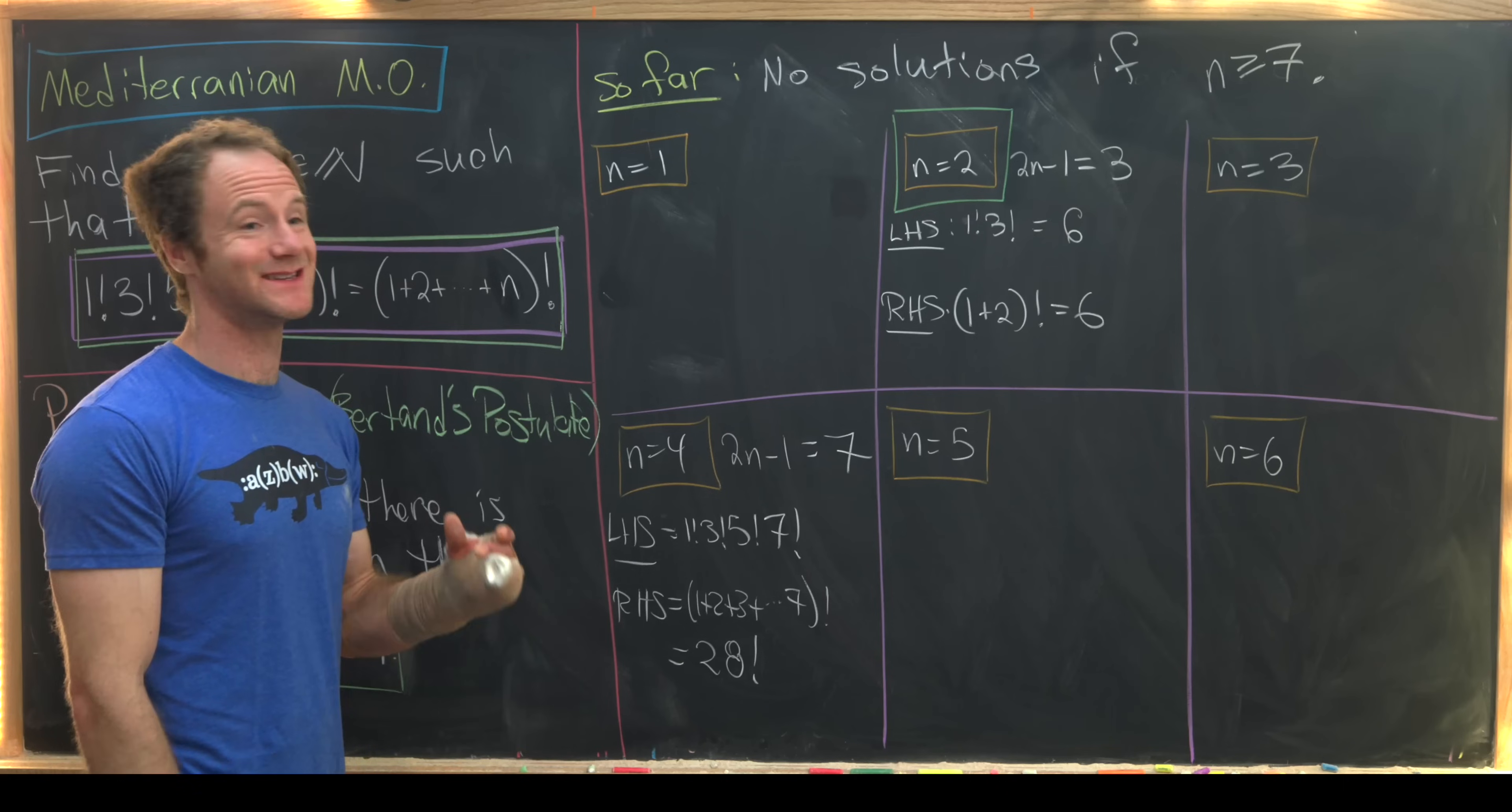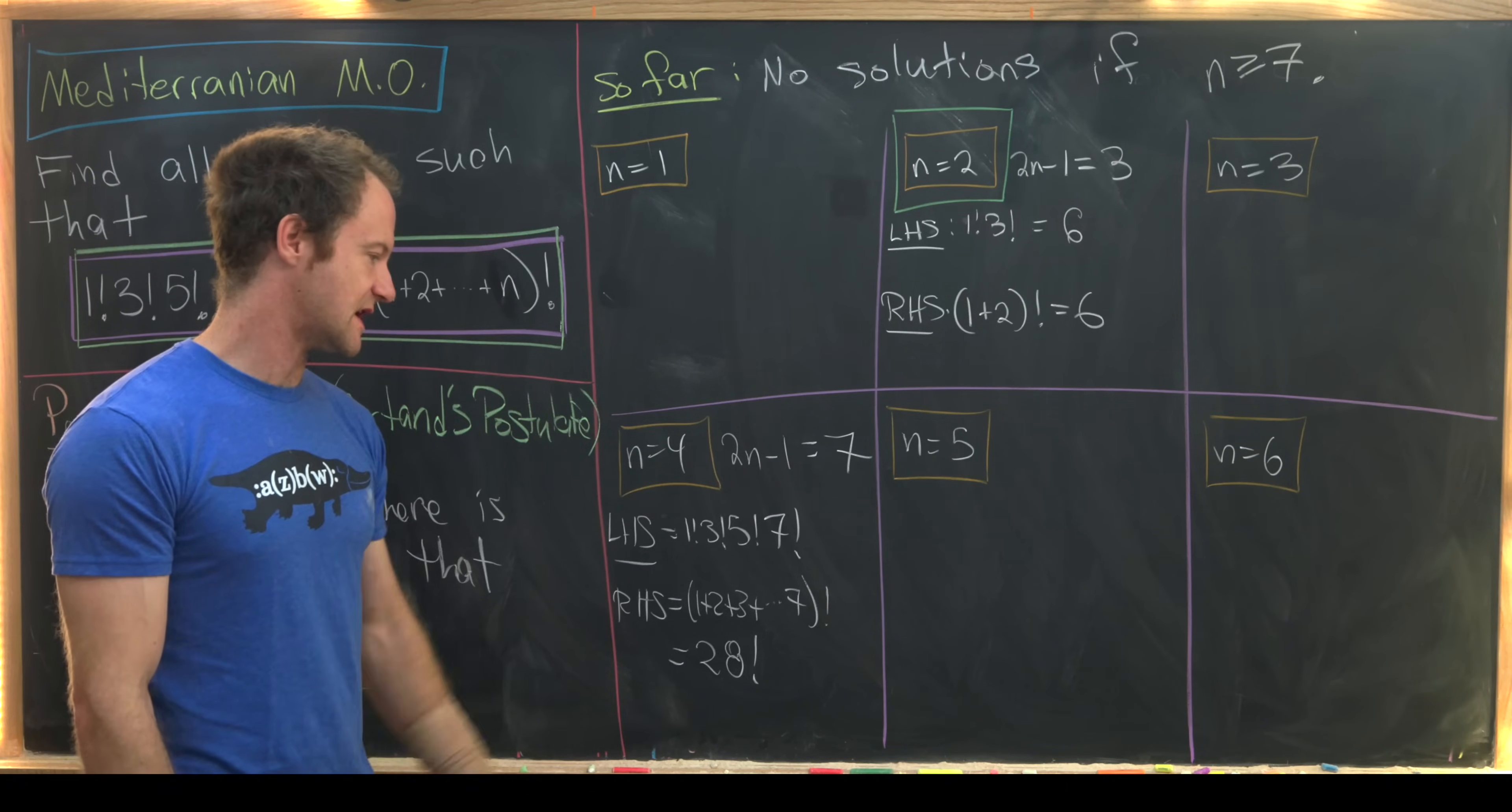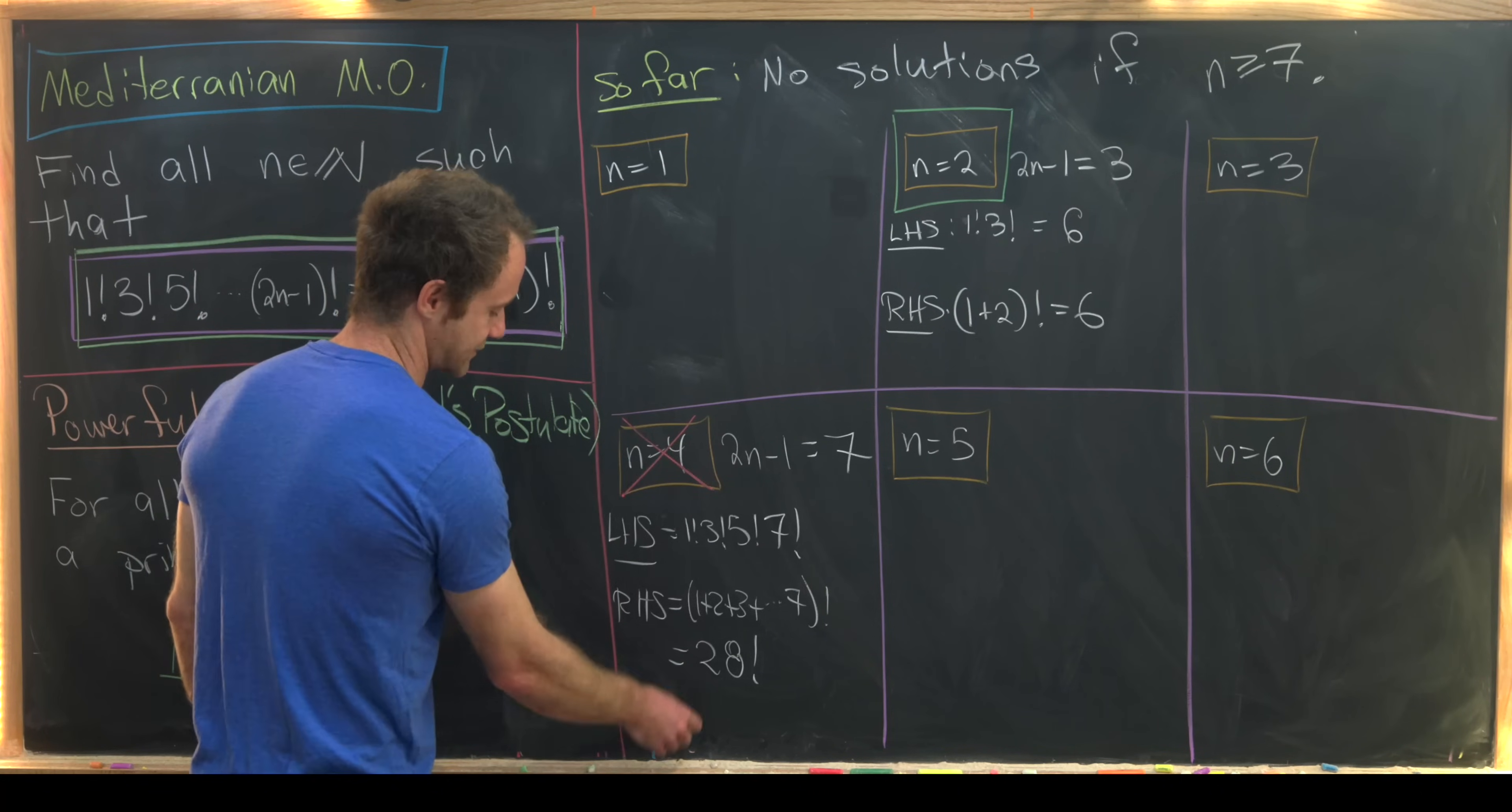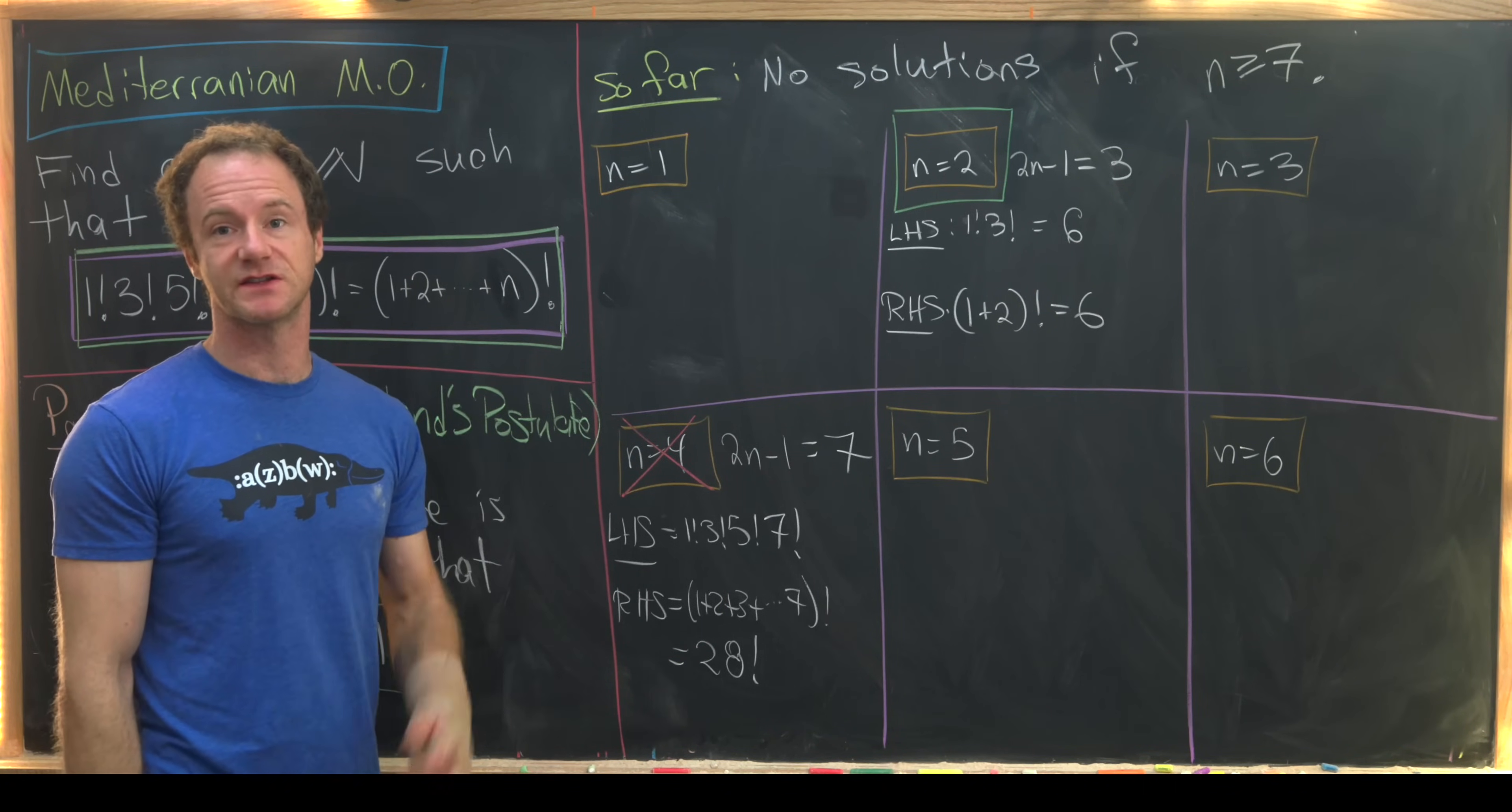But now let's notice that that does not give us a solution. For instance, let's notice that 11 divides into the right-hand side. That's because 28 factorial includes a factor of 11. But 11 does not divide into the left-hand side. So let's maybe put an X through this to show that there is no solution. And then I'll leave the remaining three problems as little homework exercises for you guys. And that's a good place to stop.